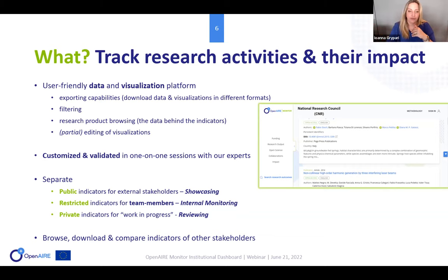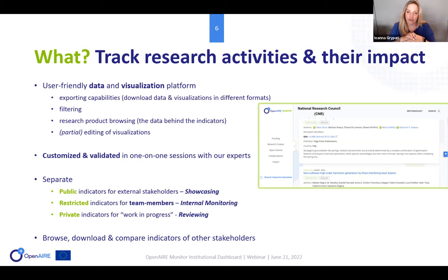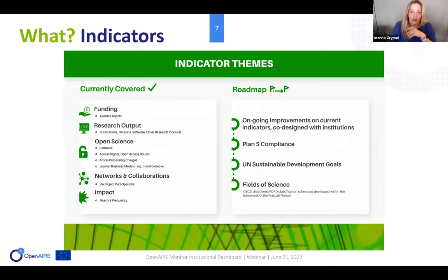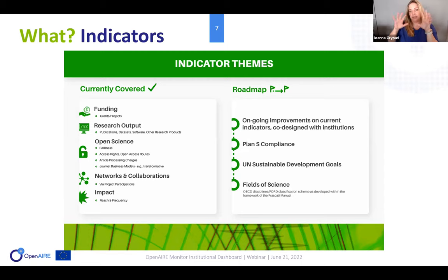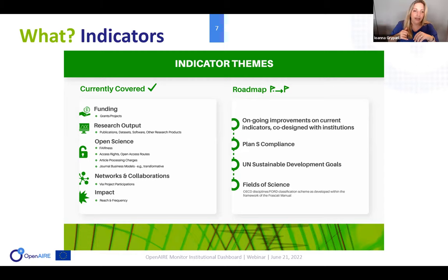One is also able to browse the public dashboards of other stakeholders. In terms of indicator themes, in the next month you will be able to go to the resources part of the monitor and download a full set of indicators with definitions and construction, which will be useful. Currently we have indicators with respect to funding — grants, projects — different types of research outputs, and open science, covering fairness, access rights, access routes, article processing charges, and general business models.